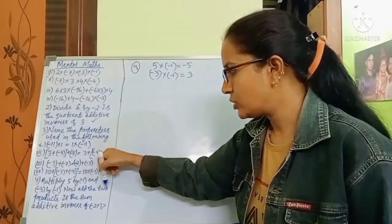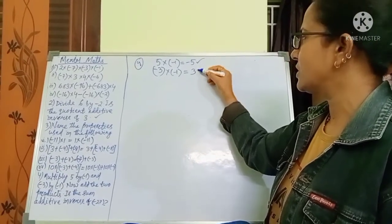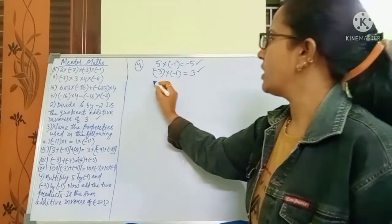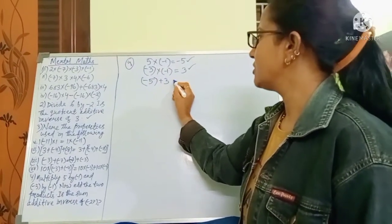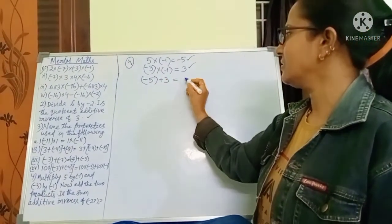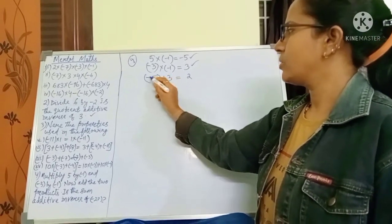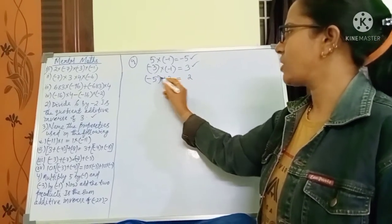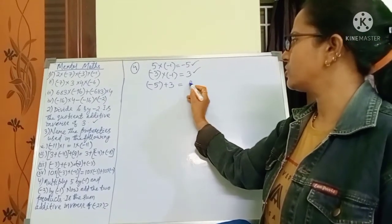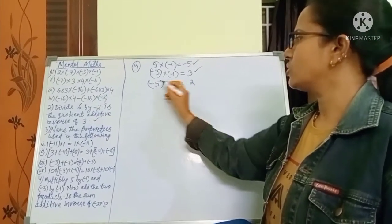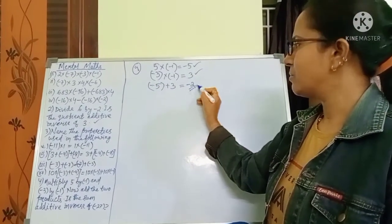Now add the two products: minus 5 plus 3. Because one value is negative and one positive, we subtract: 5 minus 3 is 2. The greater number has a minus sign, so the answer is minus 2.